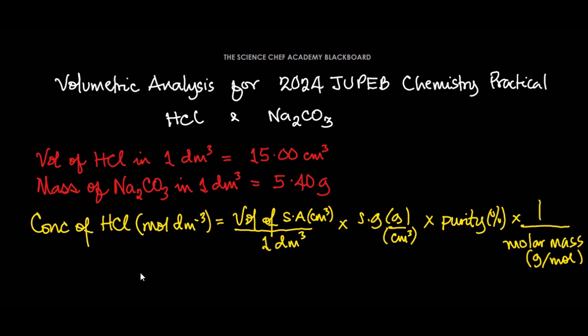So we substitute the volume of the acid to be dissolved in 1 dm³ of water, which is 15 cm³ per dm³ of water. While the specific gravity of HCl is 1.18 g/cm³, and the purity range is between 36% to 37%. I'm using 36% here, so 0.36. Then times the molar mass.